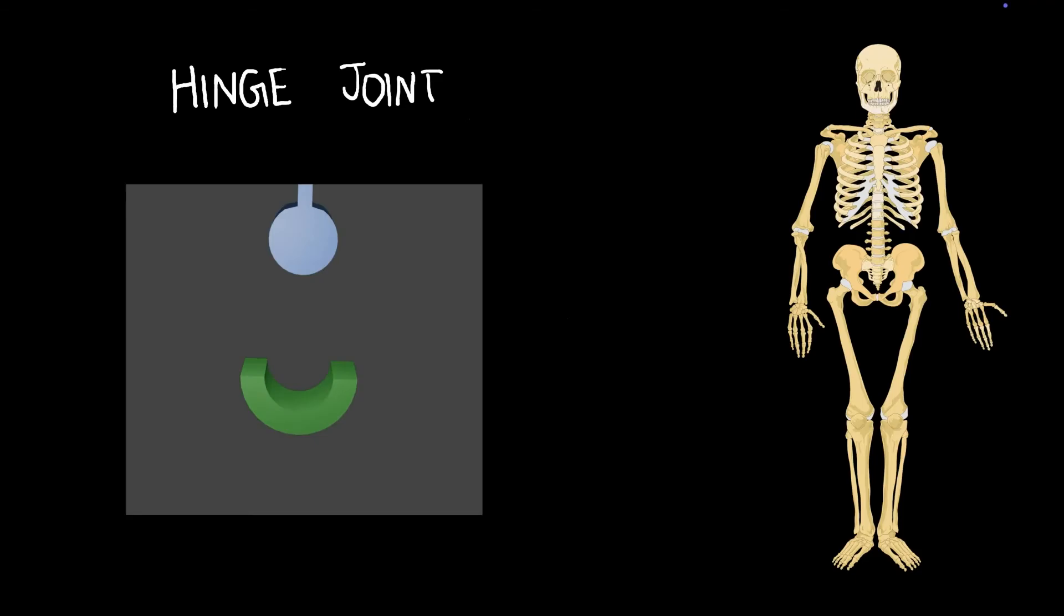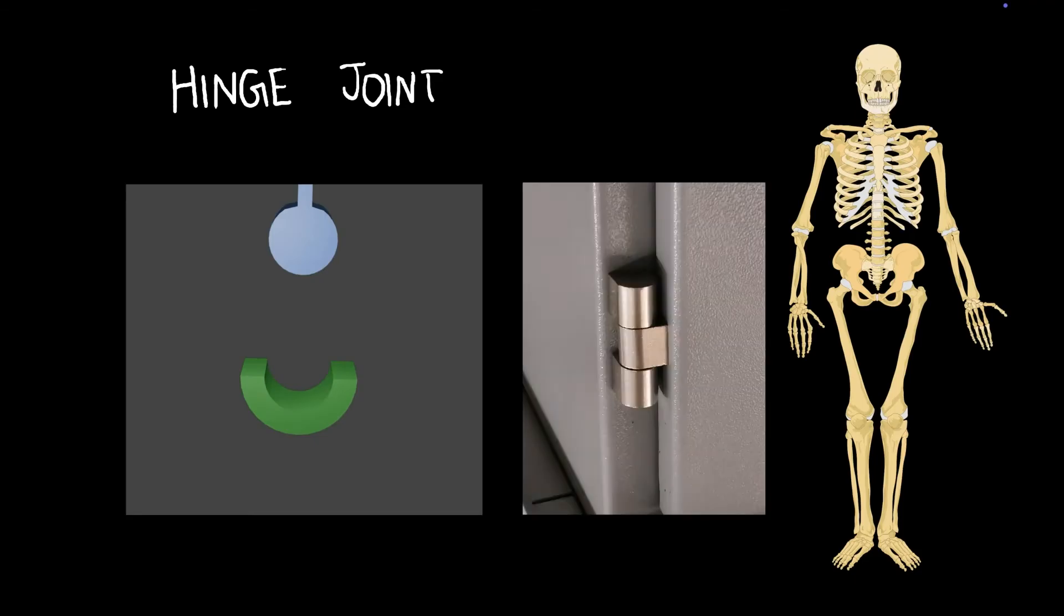Let's start with the hinge joint. I'm sure you've seen hinges at doors and windows. Hinges are pretty interesting. They allow movement along this direction, right? They allow rotation along that direction. Let's try to see an animation of a hinge in action.